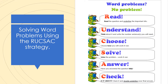R is read — read the question and underline the important bits. U is understand — think about it and write the number sentence that you will need. C is choose — choose how you will work it out. S is solve — solve the problem, work it out. A is answer — have you answered the question fully? C is check — is it likely? Check it and double underline your final answer.